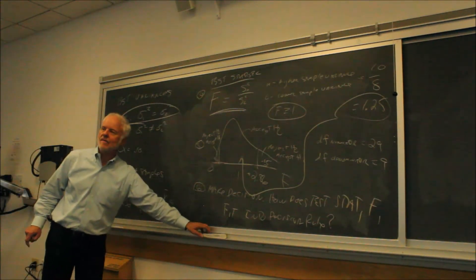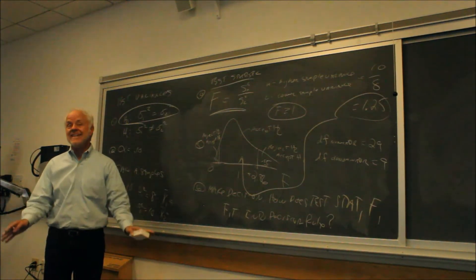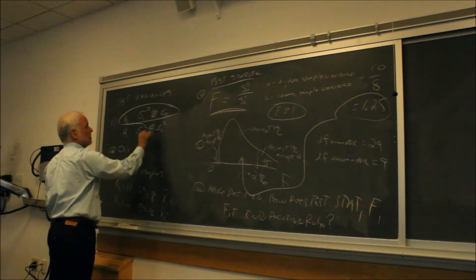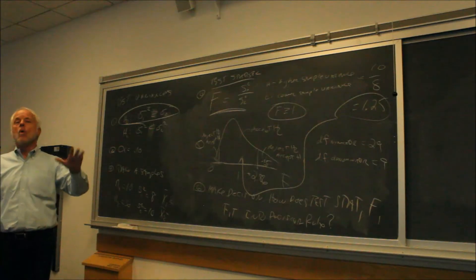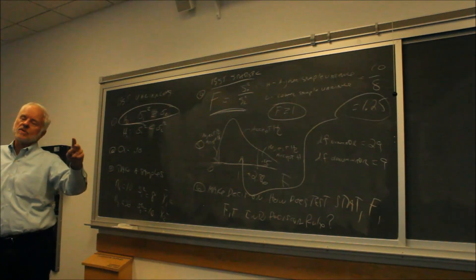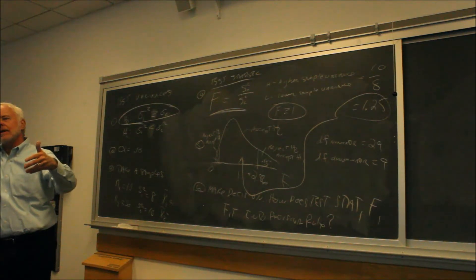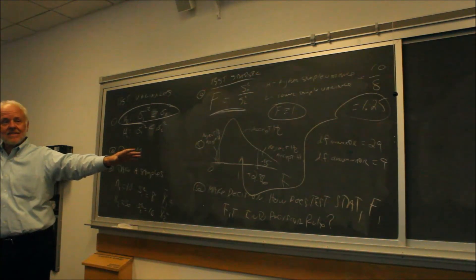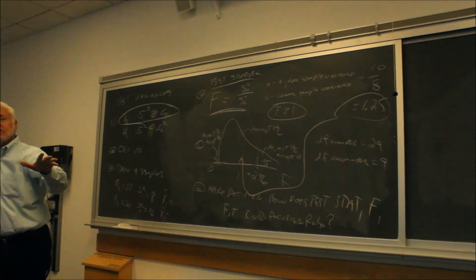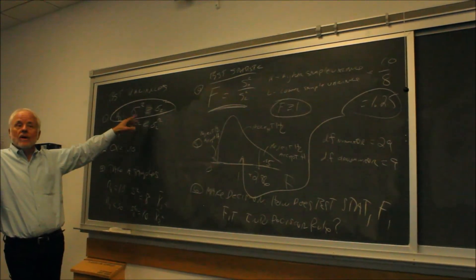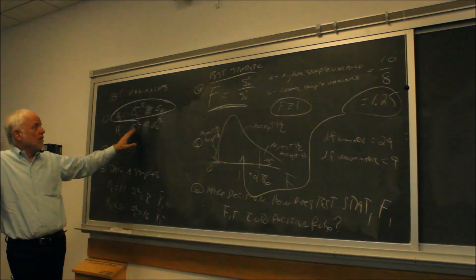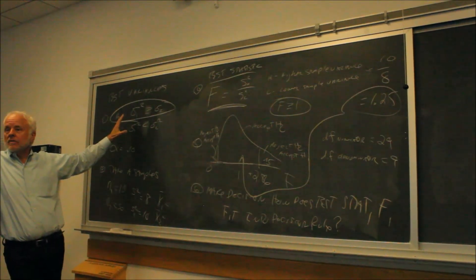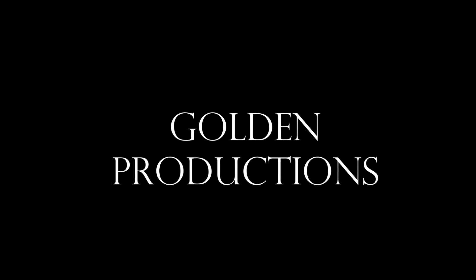At the moment, we only need this test to answer the question of whether we should assume equal or unequal variances for hypothesis testing of the mean. But if you go further in statistics, you may want to run a test as to whether one variance is less than the other. If you set it up that way — is this a one-tailed or two-tailed test?